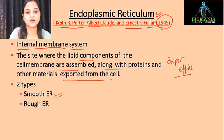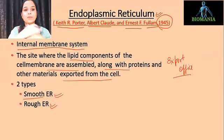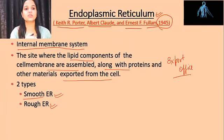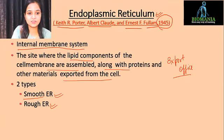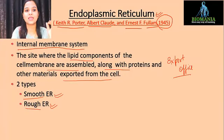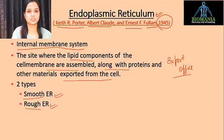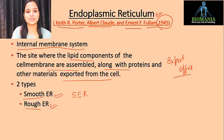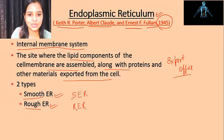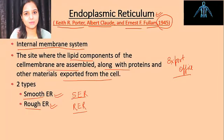The first type is the smooth endoplasmic reticulum and the second is the rough endoplasmic reticulum. As the names suggest, the smooth ER has a completely smooth surface — nothing is present on it. The rough ER has small dotted structures on its surface that make it rough. The short forms are SER for smooth endoplasmic reticulum and RER for rough endoplasmic reticulum.